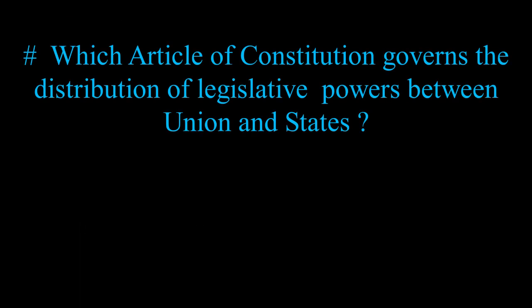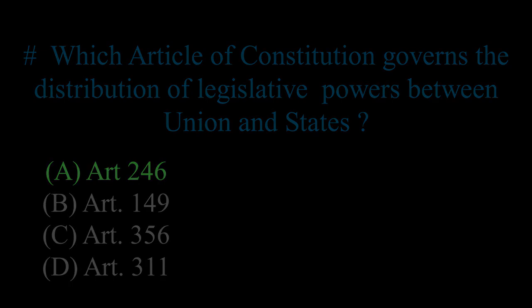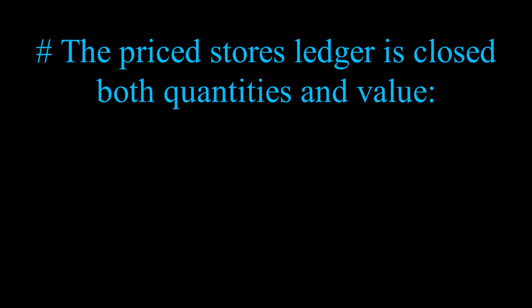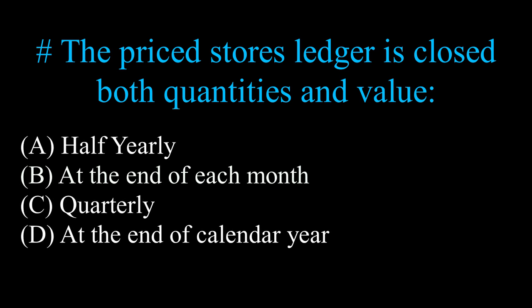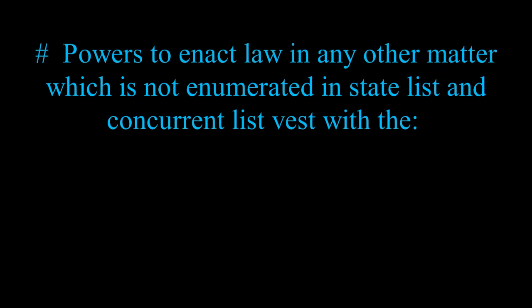Which article of the Constitution governs the distribution of legislative powers between union and states? The price stores ledger is closed both quantities and value. Powers to enact law in any other matter which is not enumerated in state list and concurrent list vest with?